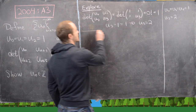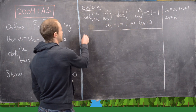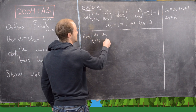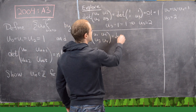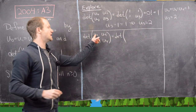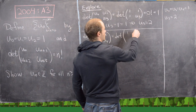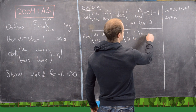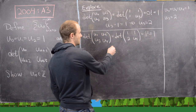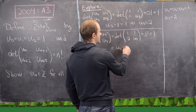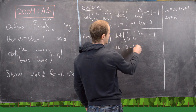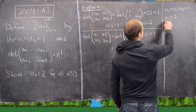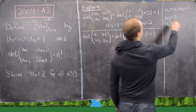Let's work out another one. The determinant of [u_1, u_2; u_3, u_4] equals the determinant of [1, 1; 2, u_4], and we need that to equal 1 factorial, which is 1. That gives u_4 − 2 = 1, so u_4 = 3. Let's add that to our list: u_4 = 3.